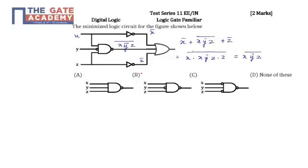If you look closely, it is option B. Since we have x times y bar times z, then finally an inverter, so it is option B. Thank you.